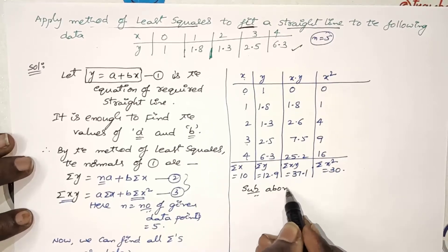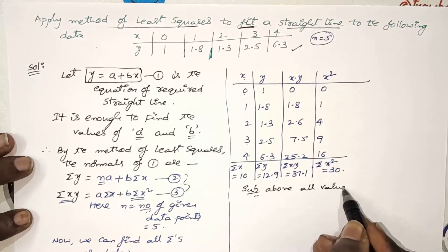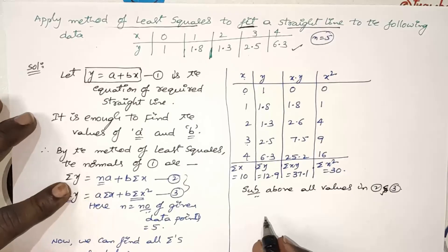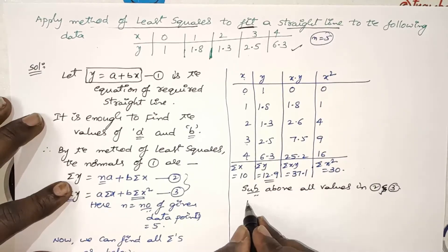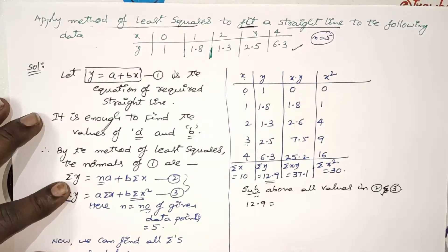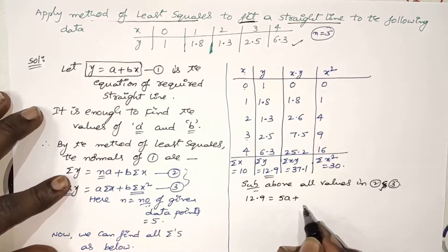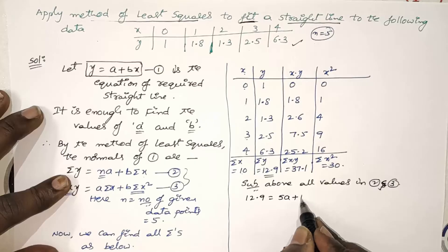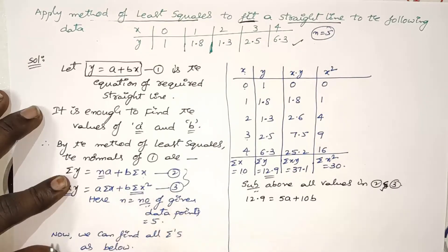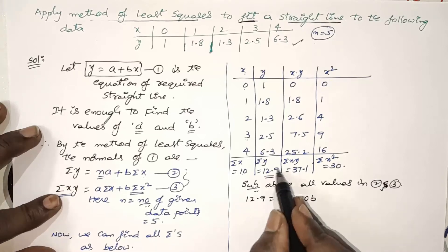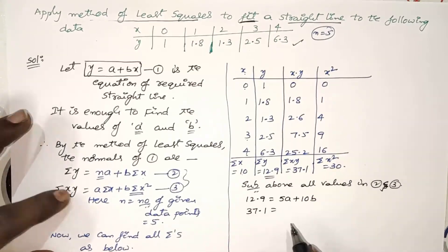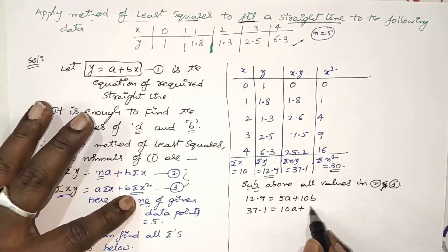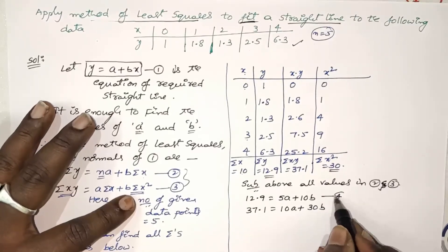Substitute all values into equations 2 and 3. The first equation becomes: 12.9 = 5a + 10b (equation 4). The second equation becomes: 37.1 = 10a + 30b (equation 5). These are two equations in the two unknowns a and b.